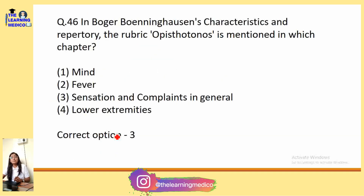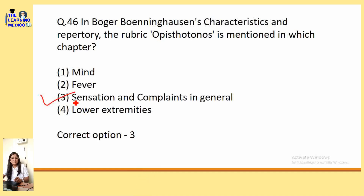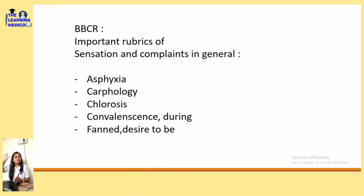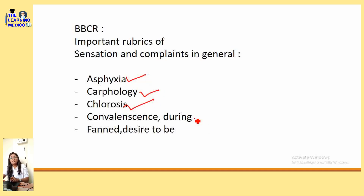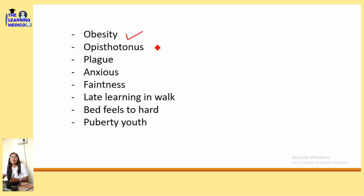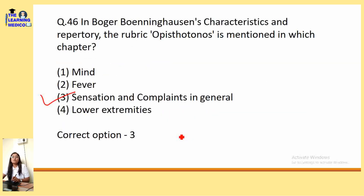In BBC (Boericke), the rubric 'Opisthotonus' is mentioned in which chapter? It is given in Sensation and Complaints. Important rubrics of that chapter include: asphyxia, chlorosis, convalescence during, desire to be fanned, obesity, opisthotonus, plague, anxious, fatness, late learning, puberty, and youth.